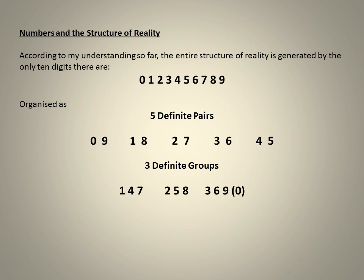So according to my understanding, the entire structure of reality is generated by the only 10 digits there are: 0 to 9. They are organized as five definite pairs — 0 & 9, 1 & 8, 2 & 7, 3 & 6, and 4 & 5 — and three definite groups: 1-4-7, 2-5-8, and 3-6-9.